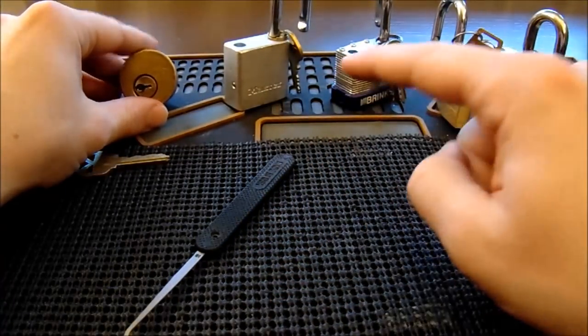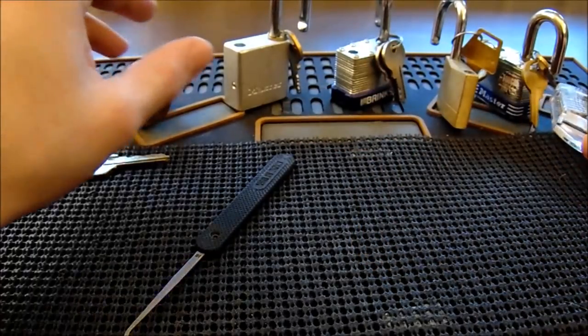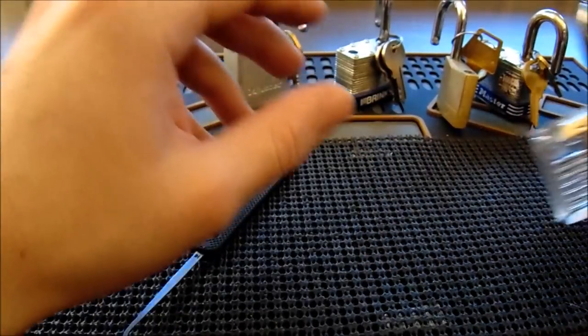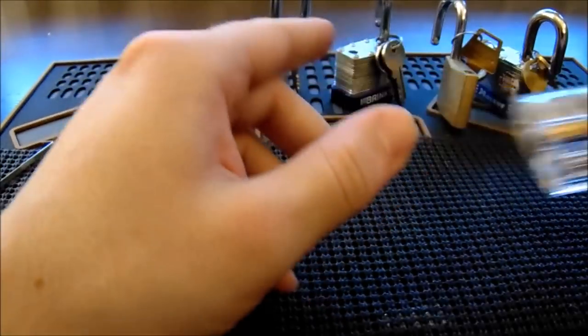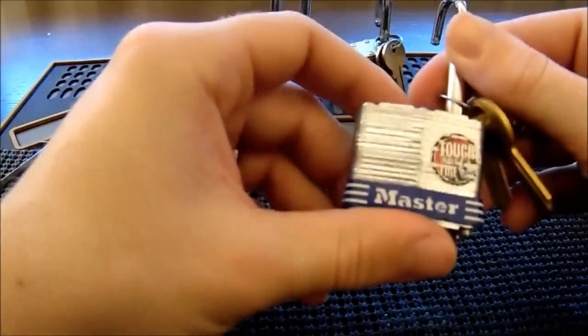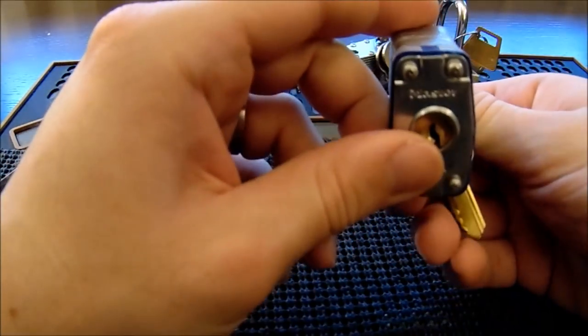So what you've seen today is me zip open one, two, three, four, five, six locks. The locks that we opened up is the clear acrylic lock. This is the first lock on my progressive lock list, then we have the Master Lock number 3, which is the second lock on my progressive lock list.